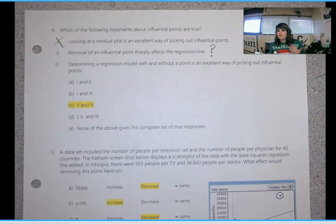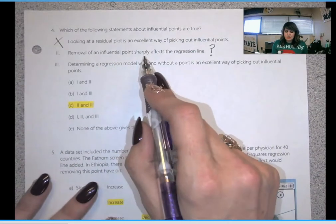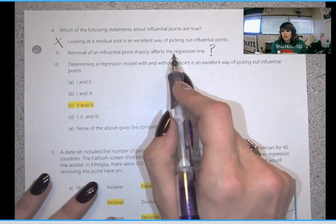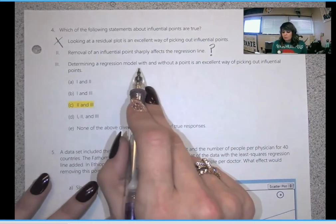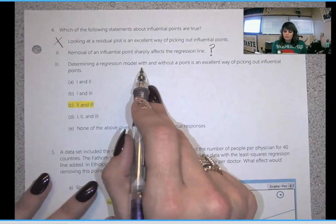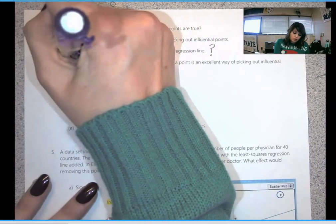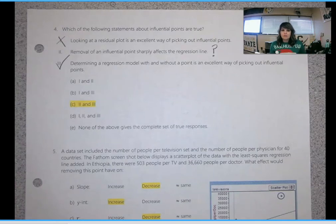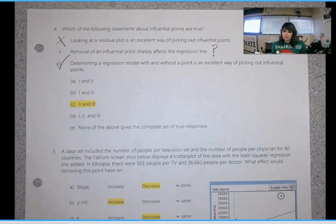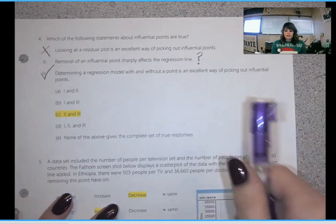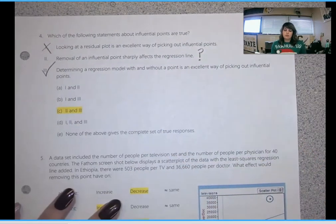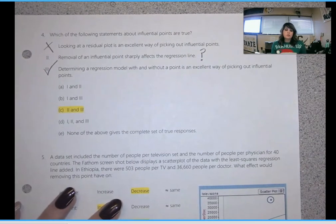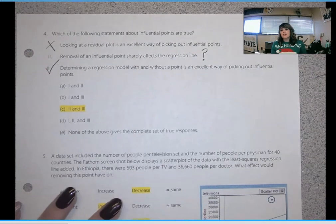Sometimes it affects R. Like in our notes, I seem to remember thinking it can affect slope, y-intercept, or correlation. So does this mean that every influential point is going to affect slope and y-intercept? I don't know for sure. Then C, determining a regression model with and without a point is an excellent way of picking out influential points. This is for sure true. So it has to be B or C because I know for sure that 3 is true. So I chose C because I'm not sure if this is true, but I'm 100% sure 3 is true and I'm 100% sure 1 is false. So C, 2 and 3 has to be the correct answer.